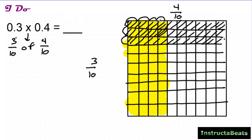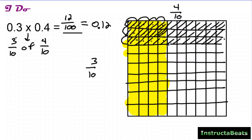To find my product, I figure out which parts were shaded with the highlighter and the diagonal line. 4 tenths with 3 tenths shaded gives me 1, 2, 3, 4, 5, 6, 7, 8, 9, 10, 11, 12 pieces. My whole denominator is now 100, so written as a fraction that's 12 hundredths, or I can write it in decimal form as well.